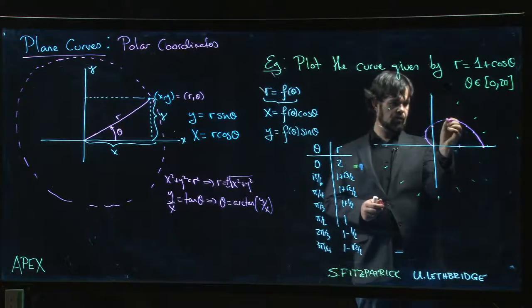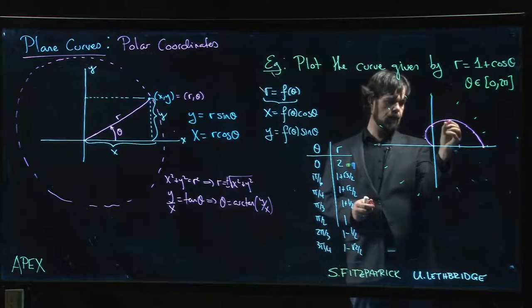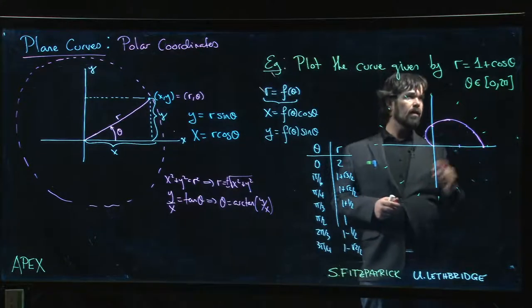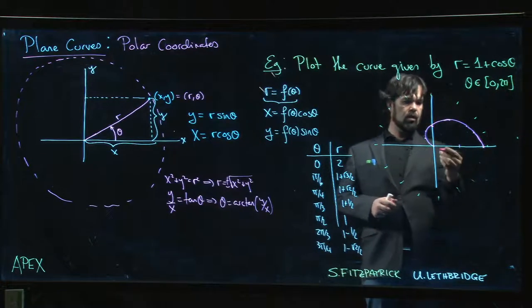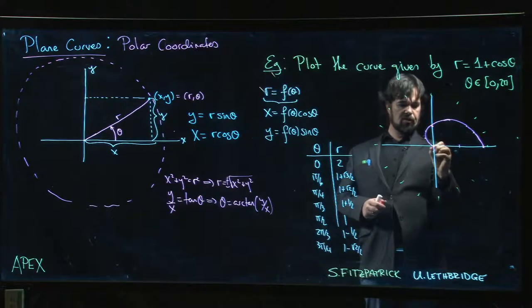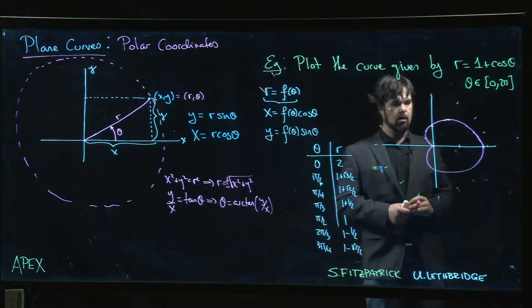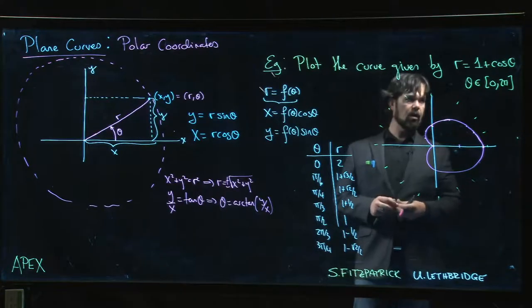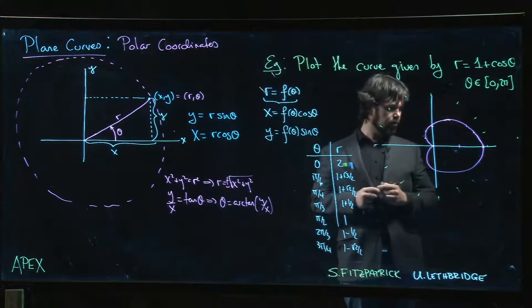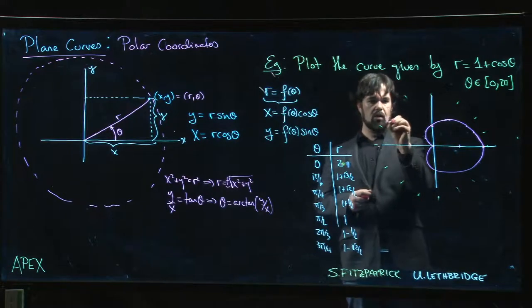Okay, so there's your curve so far. And now cos theta is even, so the other half is just going to be a mirror image of what we have so far. So we get something that's vaguely heart-shaped. Actually there's a name for this curve, it's called a cardioid because of the heart shape that you see.